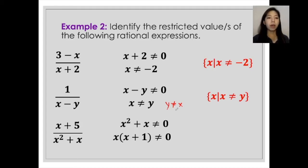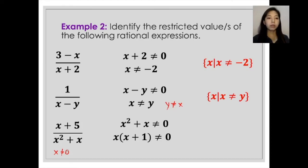From here, we now have two factors: x and x plus 1, so there will be two restrictions. For the first factor, x is not equal to zero. For the second factor, x plus 1 is not equal to zero — apply the addition property of equality and add negative 1 to both sides — giving us x is not equal to negative 1. So this solution gives us two restricted values, which are zero and negative 1.